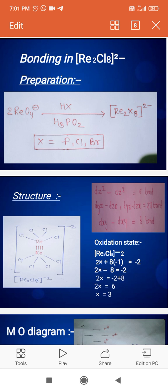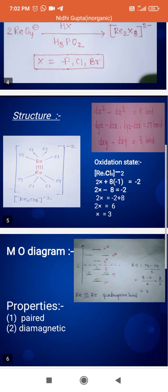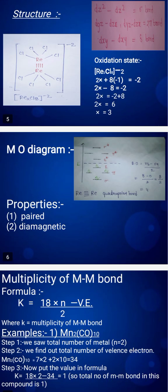Now we determine the oxidation state. For [Re2Cl8]2-, we have 2x + 8(-1) = -2. When we solve this, 2x - 8 = -2, so 2x = 6, and x = +3. So each rhenium has oxidation state +3.